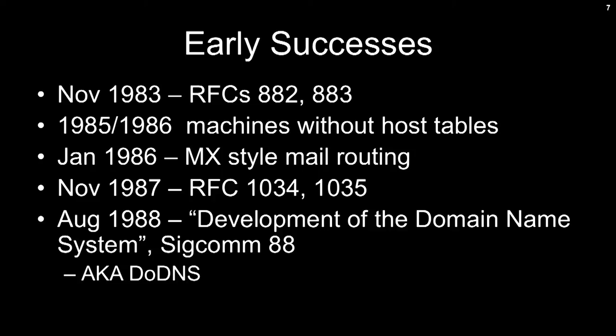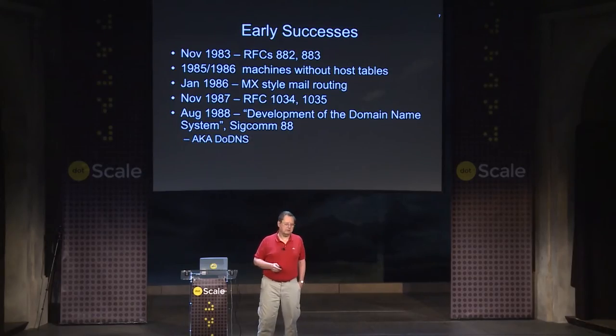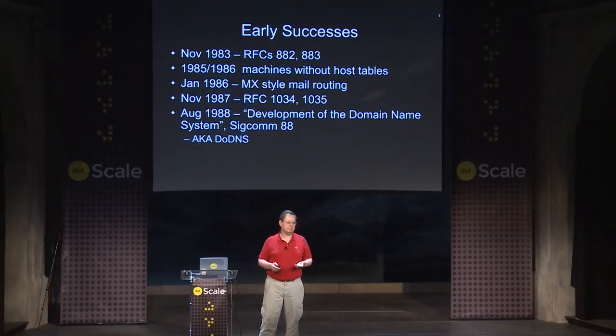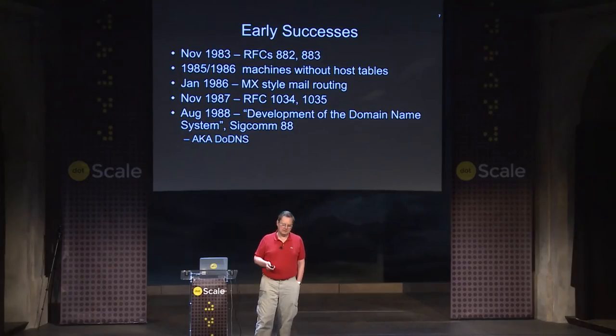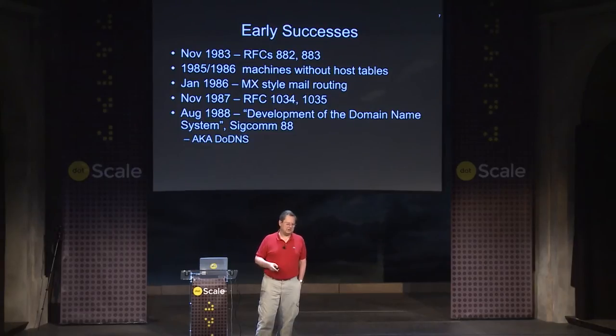The original RFCs and early implementations came out in 1983. By a couple or three years later we had machines that didn't have a host table — you can tell something is a production system when people operate it without the backup of the previous system. In 1986 the first extension I didn't write appeared: the whole idea of mail routing using MX records. Then we had the final set of specs that are still the base. One thing I think is wrong with current DNS is that those specs still stand.